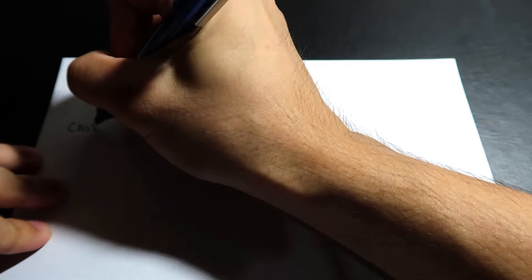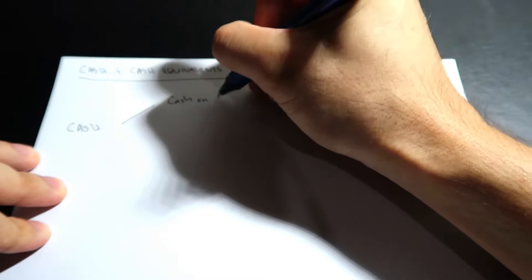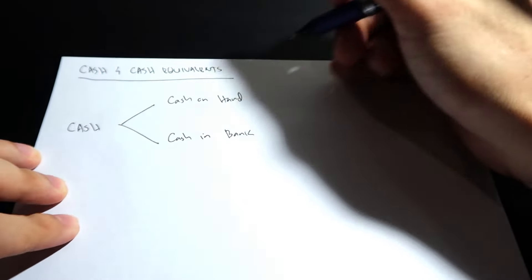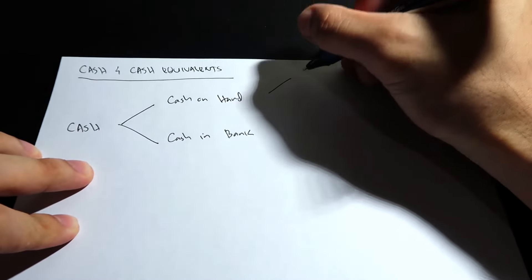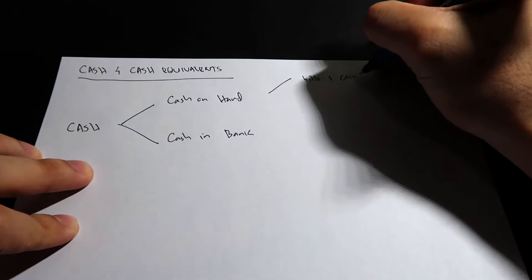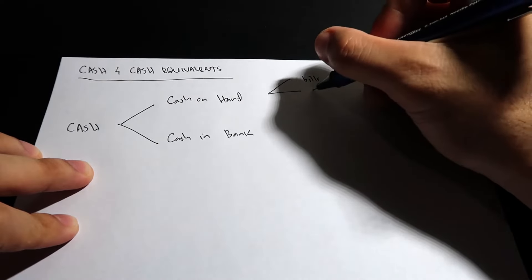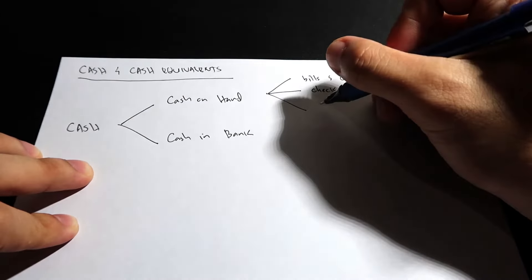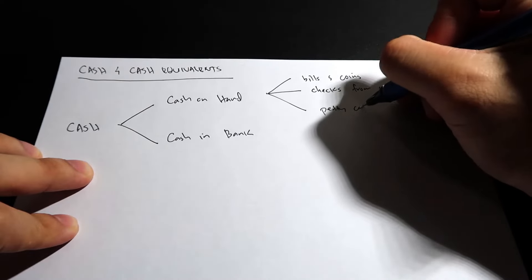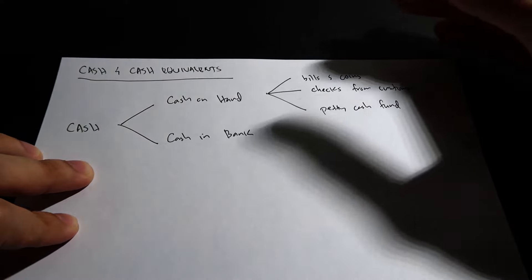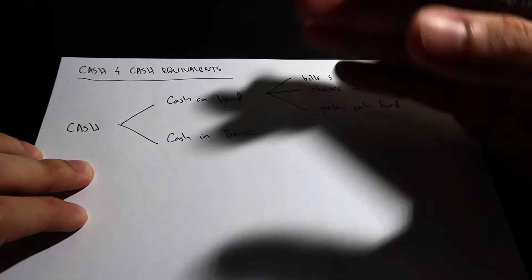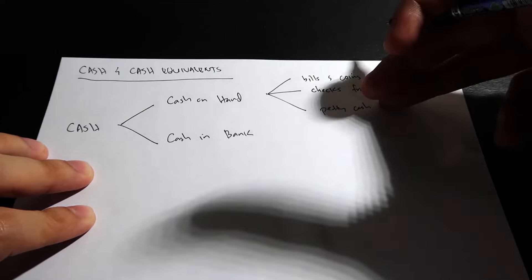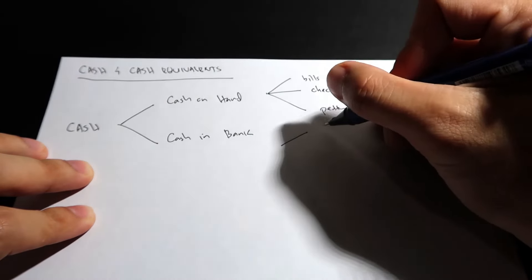For cash, there are two types: number one is cash on hand, and number two is cash in bank. Cash on hand includes: first, bills and coins; second, checks received from customers; and third, petty cash fund. We use petty cash fund for small expenses when it's not practical to use checks.